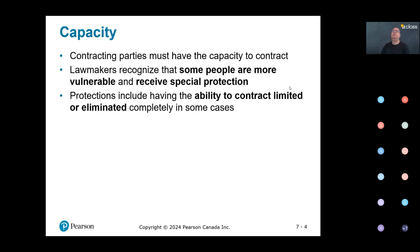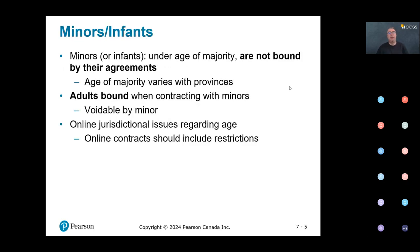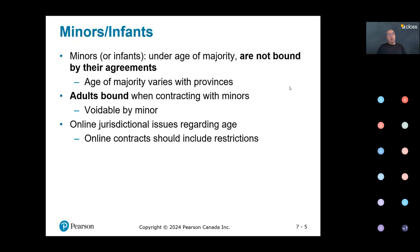We're going to look at several categories of people, emphasizing the most important ones. We start with minors and infants — those terms are interchangeable. They are below the age of majority. My question to you: what is the age of majority in BC? Nineteen — that's correct. What is the age of majority in Alberta?